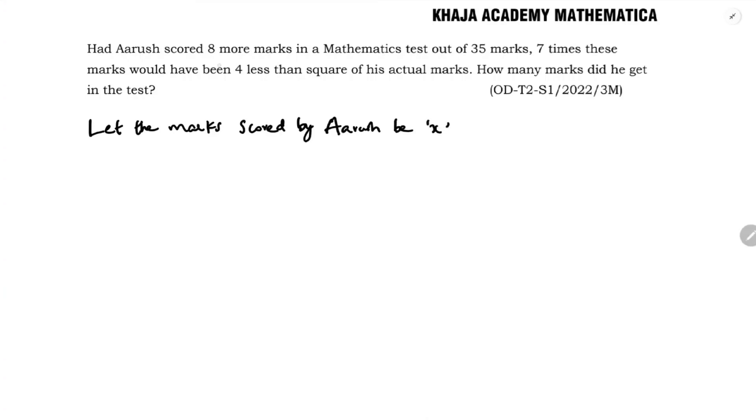So now, if he had 8 more marks in mathematics, 7 times this marks is 4 less than square of his actual marks.